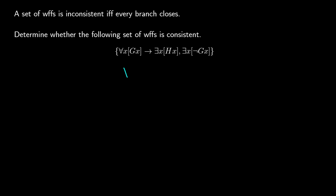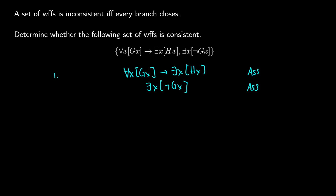For the first example, we set up two assumptions. Line 1 is 'for all x, gx arrow exists x, hx'. Line 2 is 'exists x, not gx'. We can start by doing existential elimination on line 2, replacing 'not gx' with 'not ga'. We check line 2 off — from line 2 we did existential elimination.